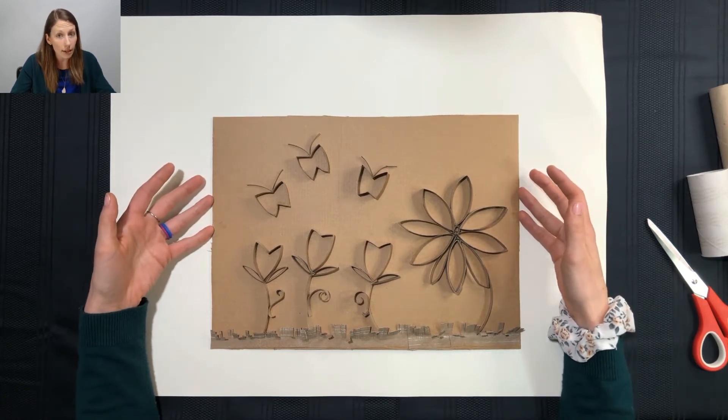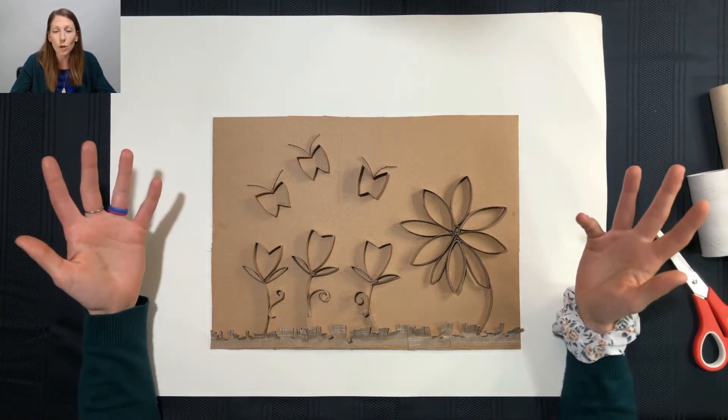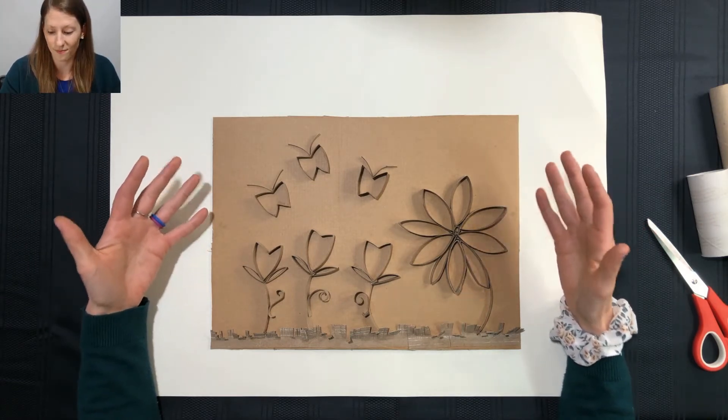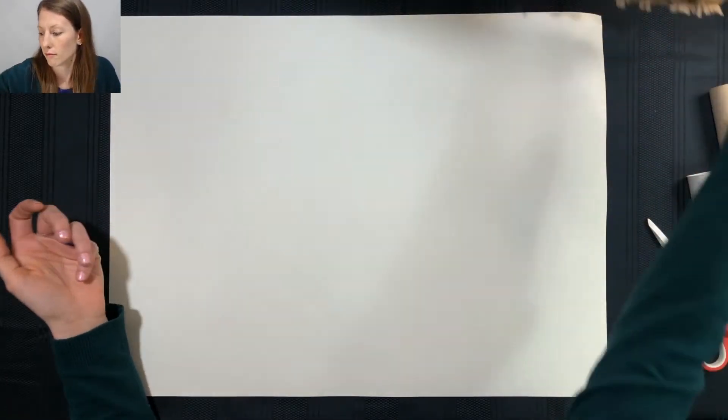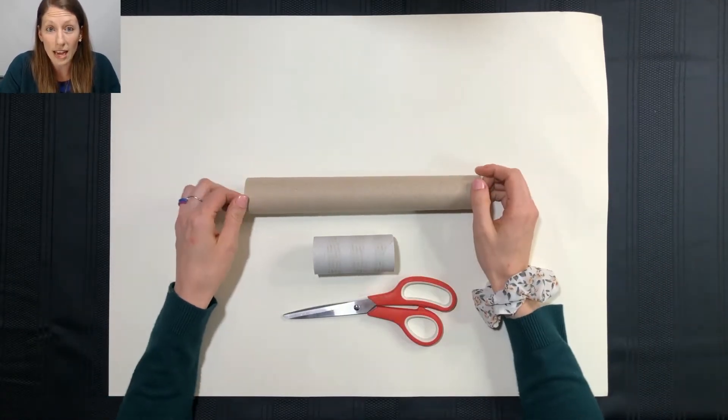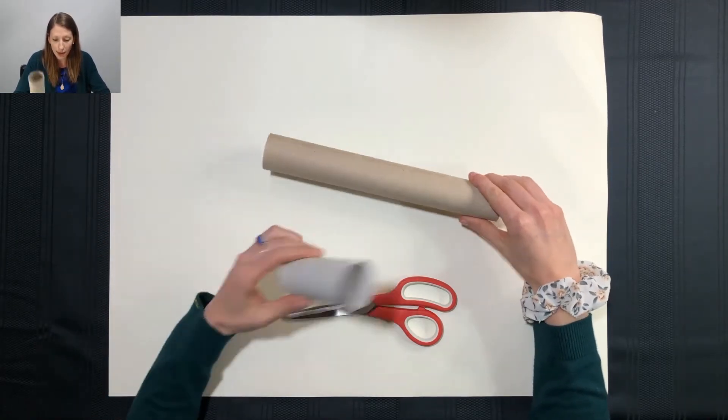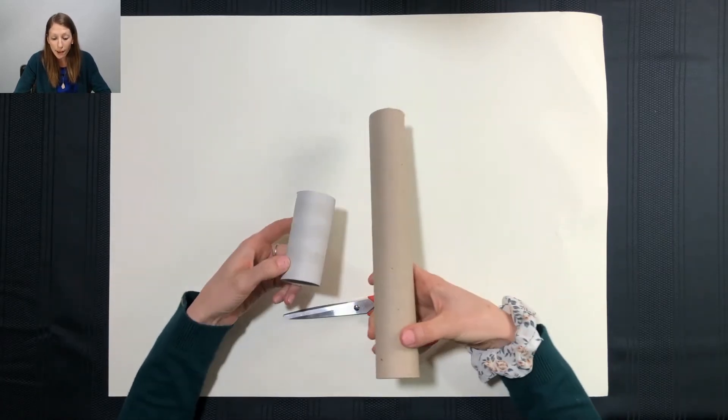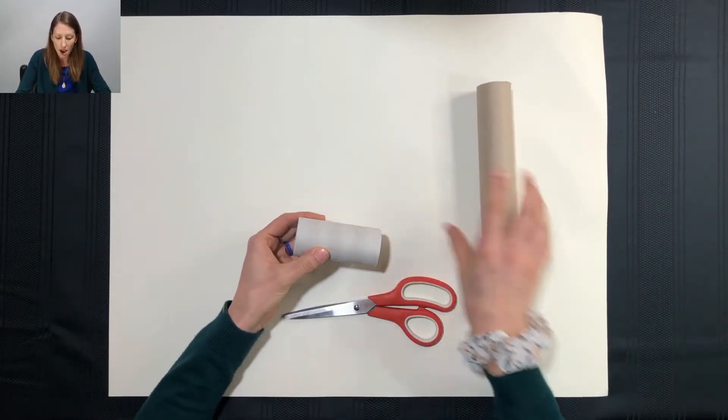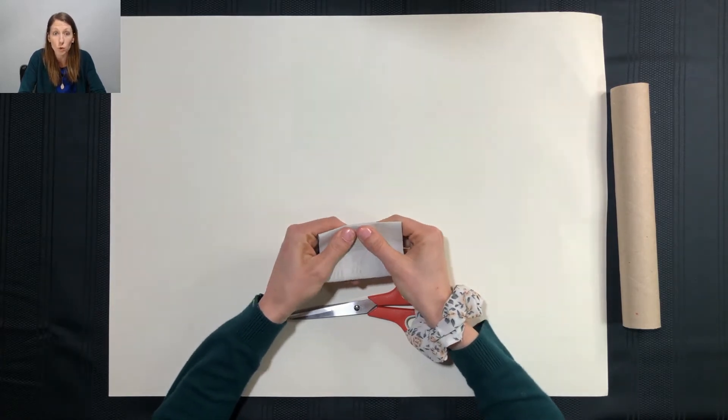In order to get started go ahead and find even if you just have one today, a paper towel roll or a toilet paper roll, and also a pair of scissors. Go ahead and get your supplies. Now you have your supplies let's go ahead and get started. So I'm using both a toilet paper roll and a paper towel roll. The best way to get started is I like to take it and just kind of smush it down because it makes it a little bit easier for when you are cutting it.